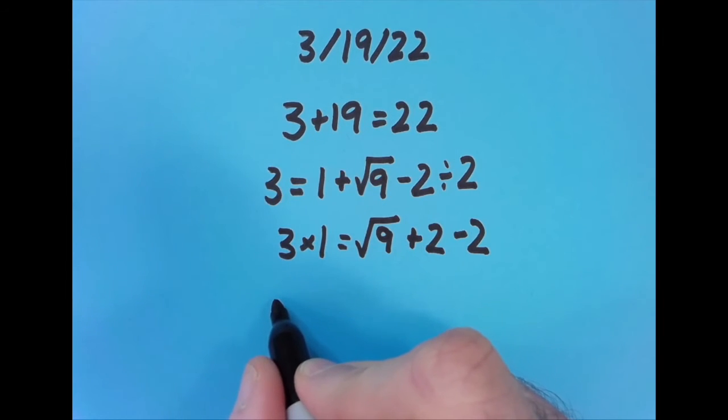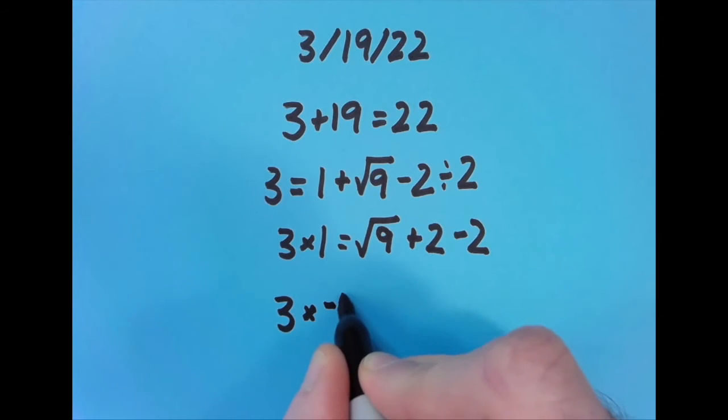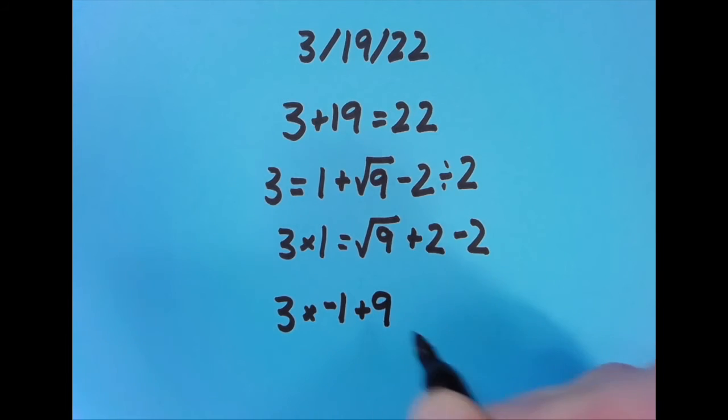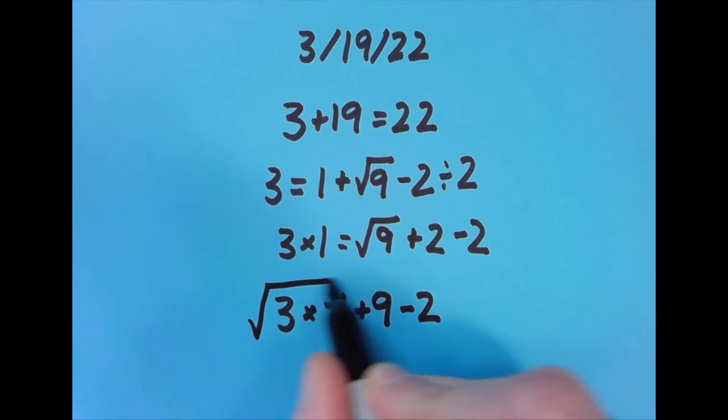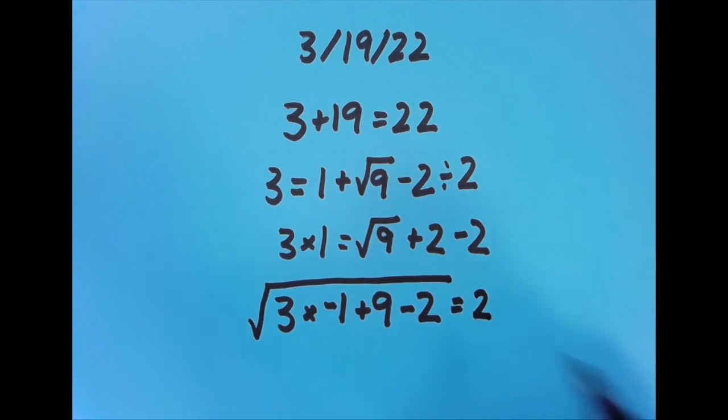And then I said, I wanted to try it one more way. I did 3 times negative 1, which is negative 3, plus 9, which is 6, minus 2, which is 4. And the square root of 4 equals 2.